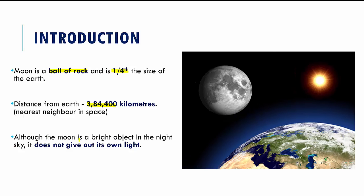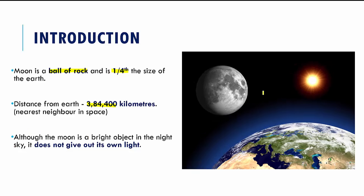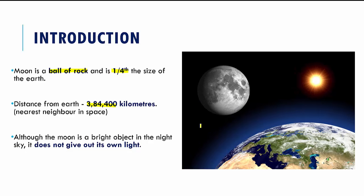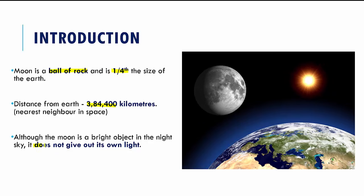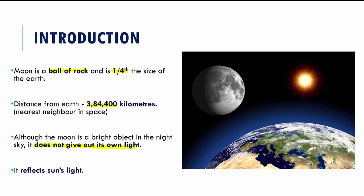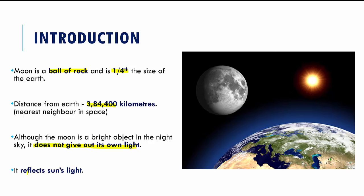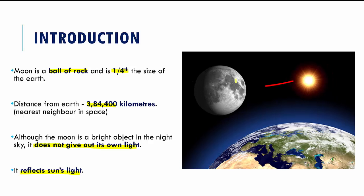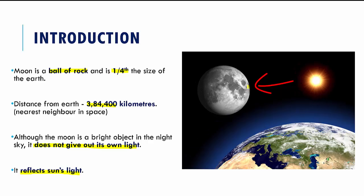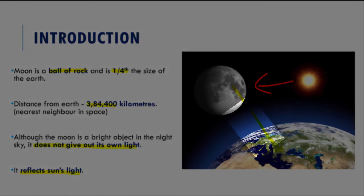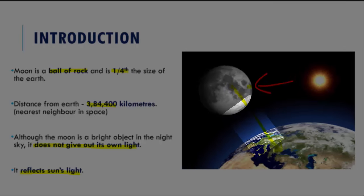Although the moon is a bright object in the night sky, it does not have any light of its own. Whatever light of the moon that you see is nothing but the reflection of the sun's light. The sun's light falls on the moon and the moon simply reflects that light onto the earth.